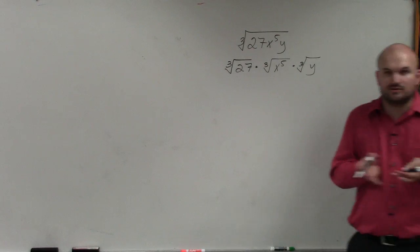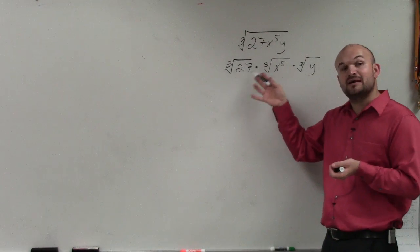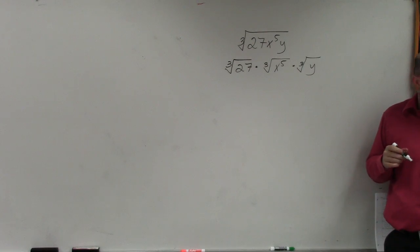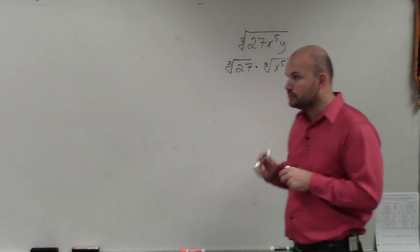So the rules of radicals allow us to do that. As long as they're separated by multiplication or division, we can break it up into separate radicals. So now I've got to take the cube root of 27.